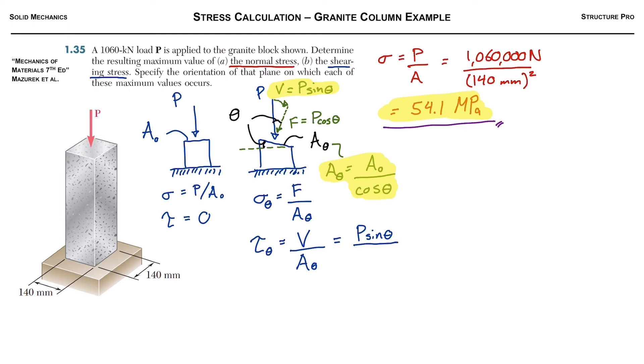So it would be P sine theta divided by A naught, and in this case we got to put the cos theta. We can flip it and put it on the top there, cos theta.